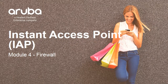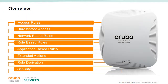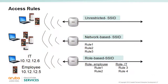Module 4: Aruba Instant Firewall. In this module we'll look at access rules, unrestricted access, network-based rules, role-based rules, application-based rules, the extended actions you can place on rules, role derivation, and security. There are three types of SSID access rules we will discuss in this module: unrestricted, network-based, and role-based SSIDs.